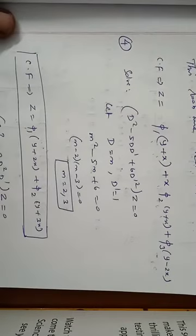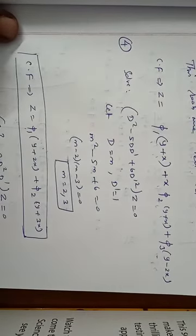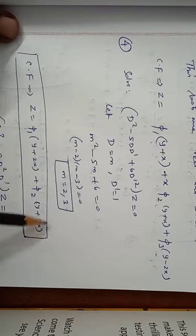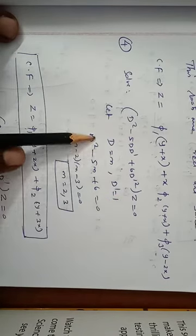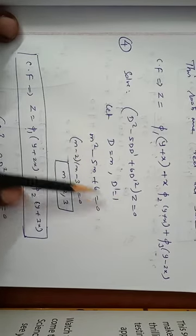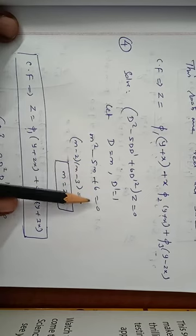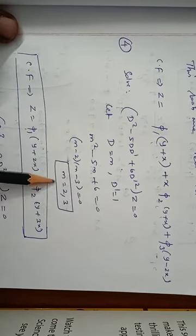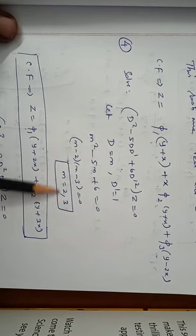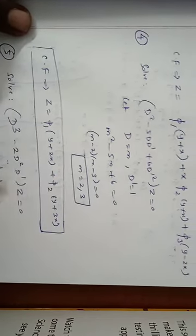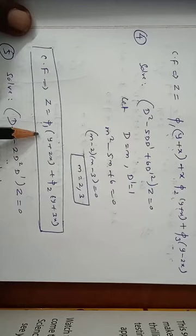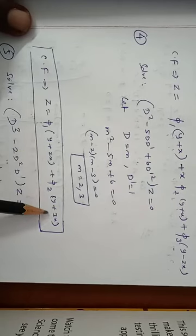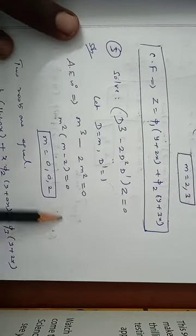Problem 4: Solve D² - 5DD' + 6D'²z = 0. Let D = m, D' = 1. The auxiliary equation is m² - 5m + 6 = 0, which factors as (m - 2)(m - 3) = 0, giving m = 2, 3. The two roots are different, so z = φ₁(y + 2x) + φ₂(y + 3x).